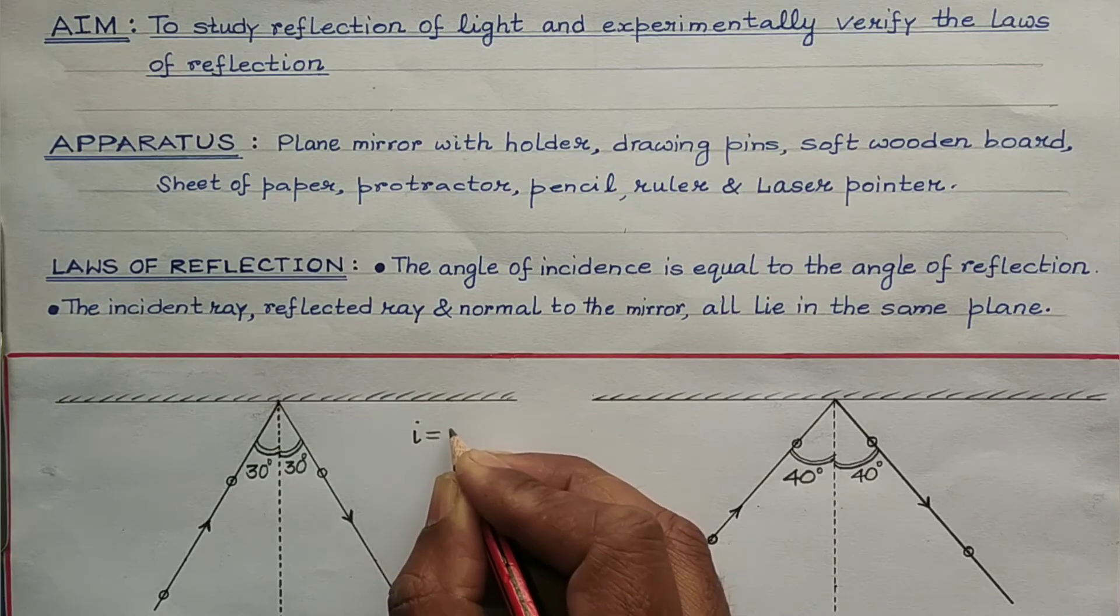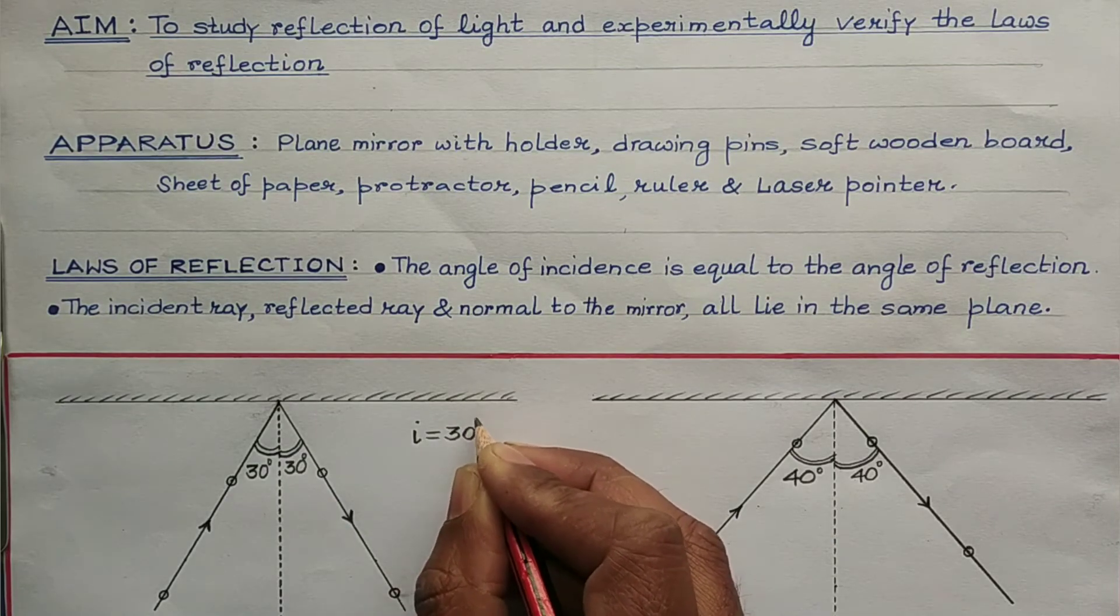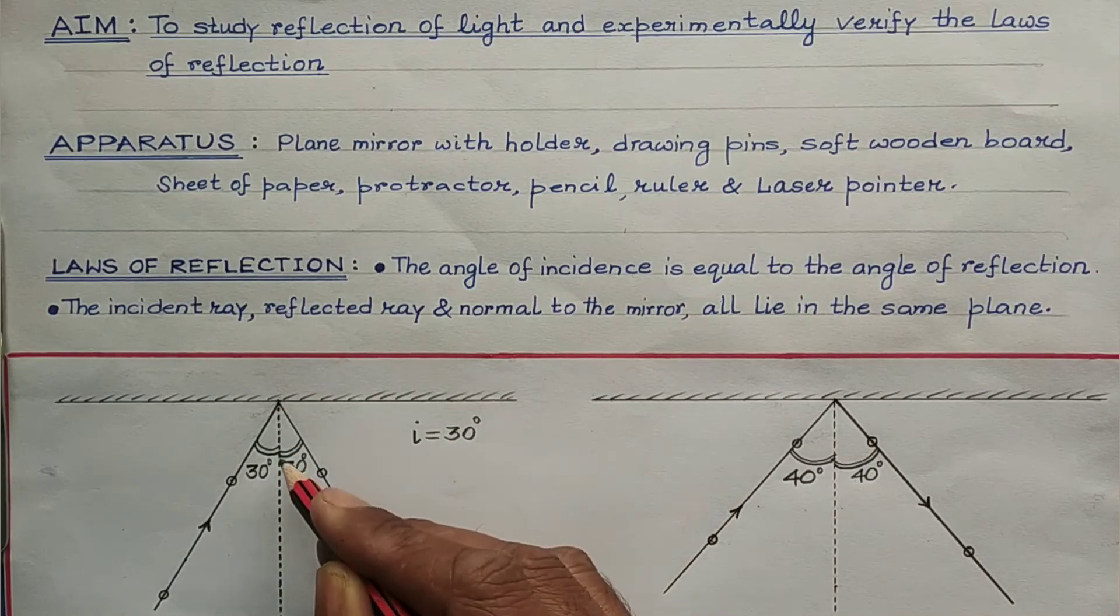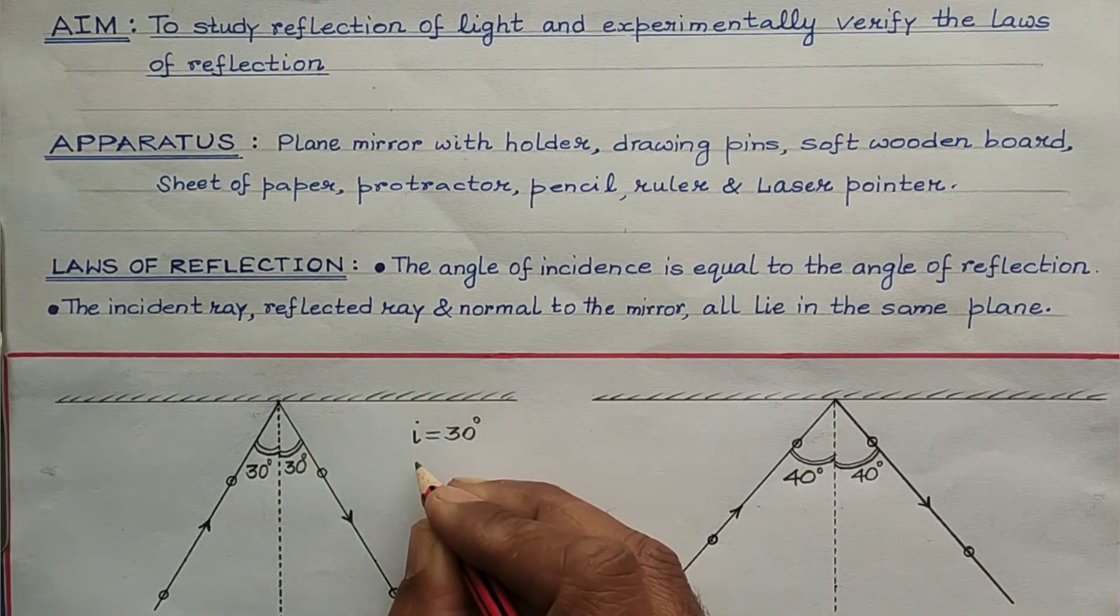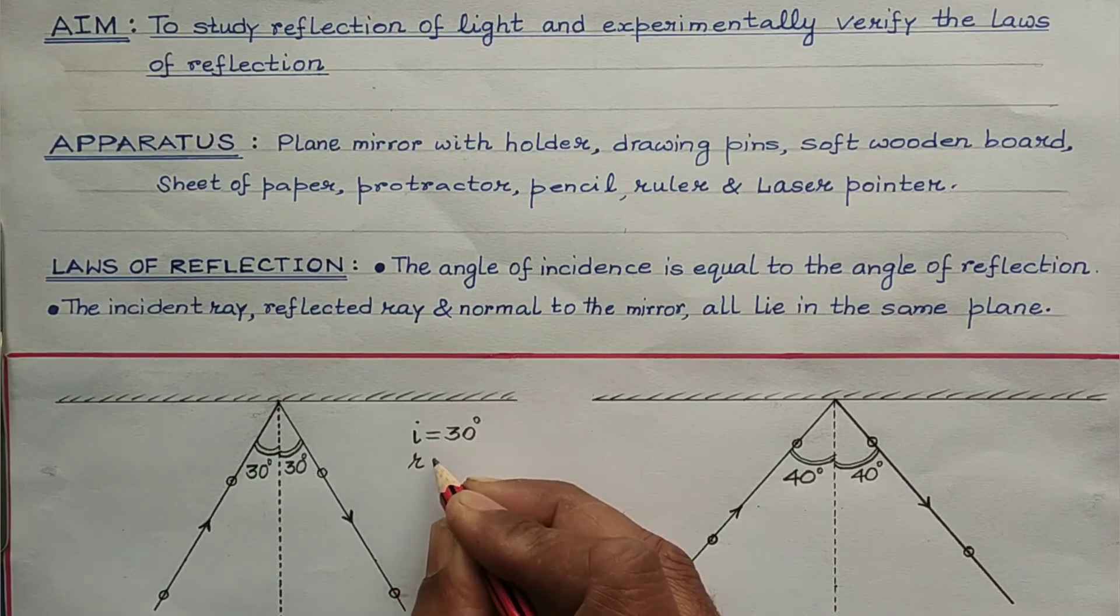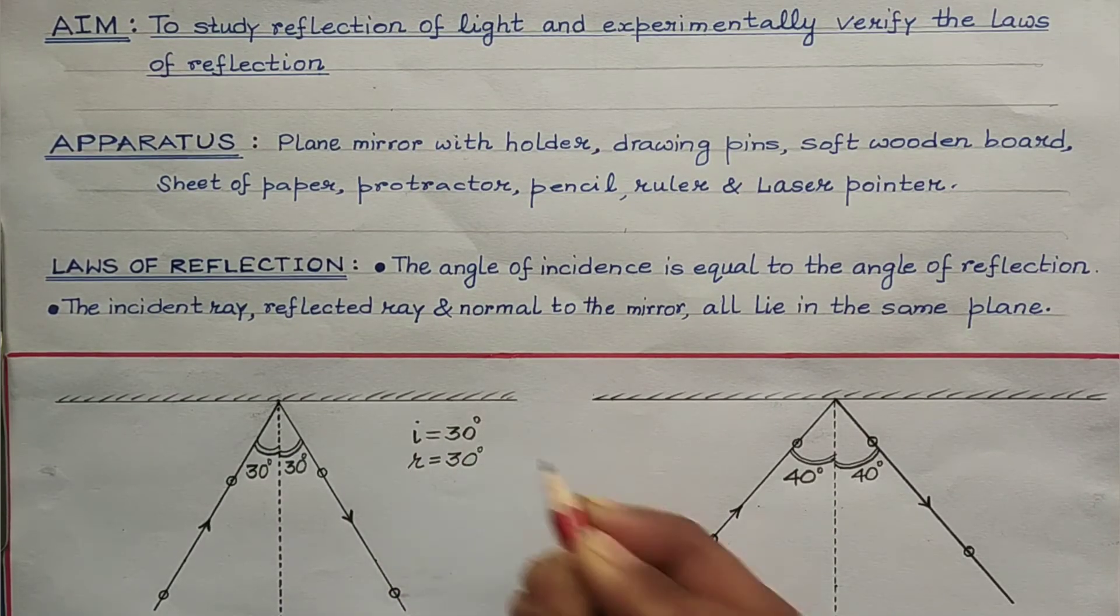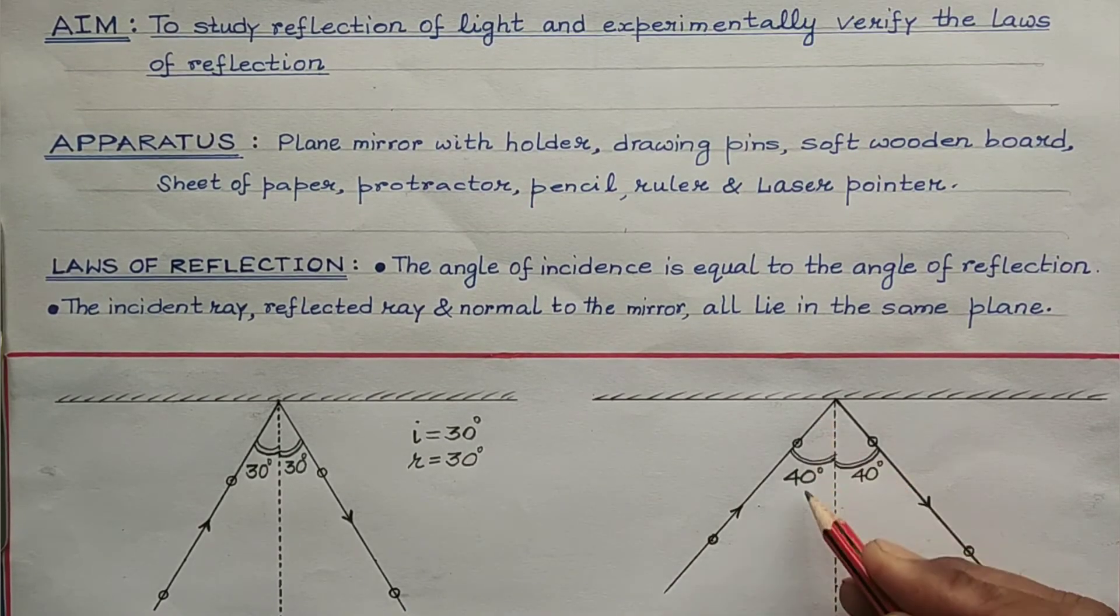In the first observation, when the angle of incidence is 30 degrees, then the angle of reflection which is the angle which the reflected ray makes with the normal, that is also measured to be 30 degrees. So, obviously, angle of incidence at a point is equal to the angle of reflection.